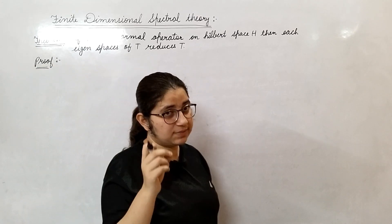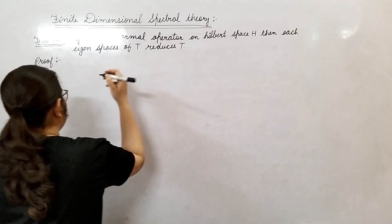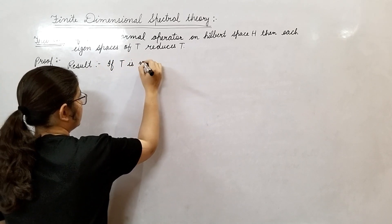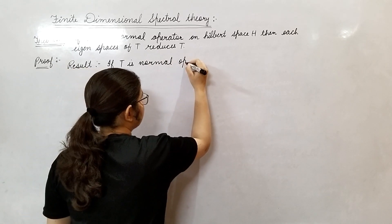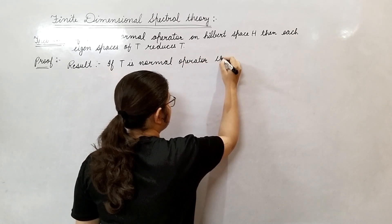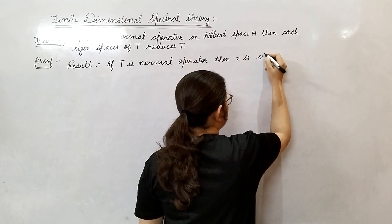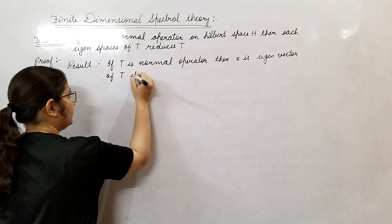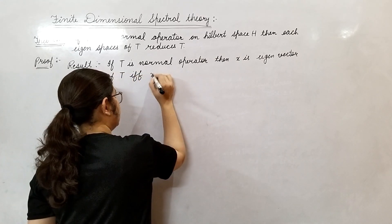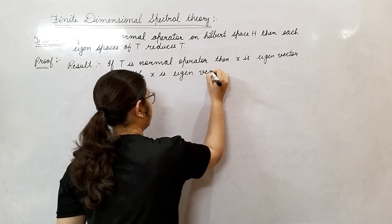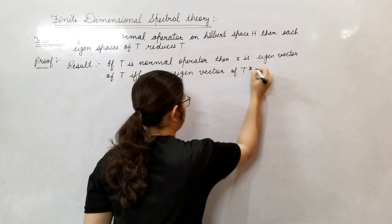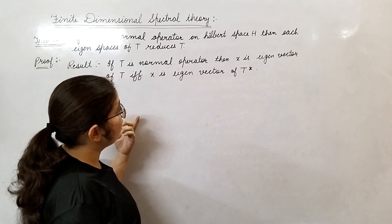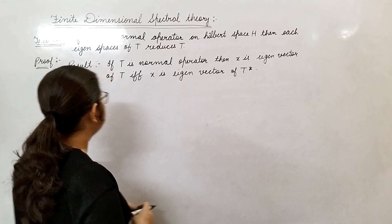Before proving this theorem, I will use one result. That result is: if T is a normal operator, then x is an eigenvector of T if and only if x is an eigenvector of T*. While doing the proof, I will use this result that if x is an eigenvector of T, then x is an eigenvector of T* also.